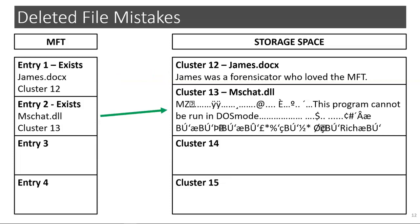Here we see the second MFT entry. It also shows as being allocated or existing and refers to a file named mschat.dll. It further shows that the file exists in the storage space of the hard drive starting at cluster 13.